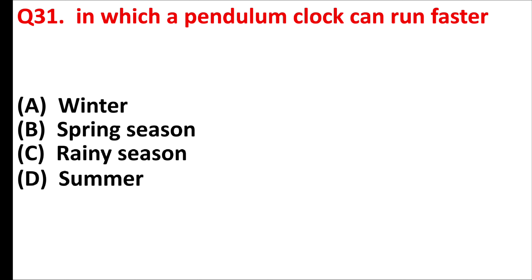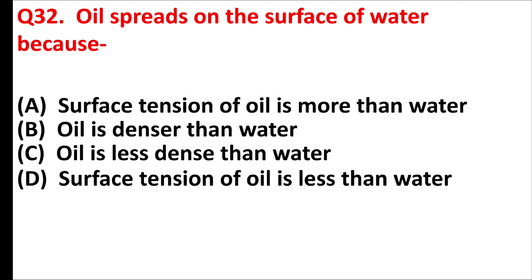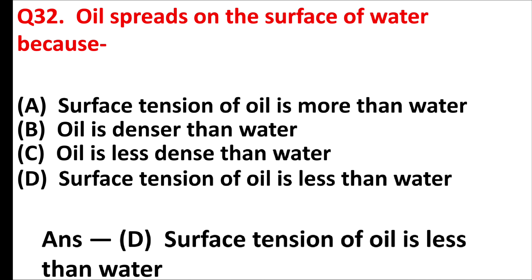In which season can a pendulum clock run faster? Answer is option A: winter. Oil splits on the surface of water because — answer is option D: the surface tension of oil is less than that of water.